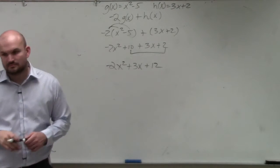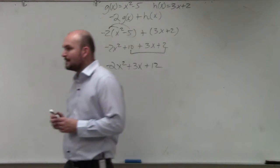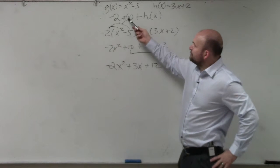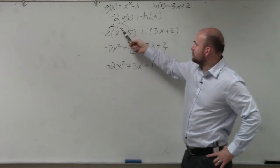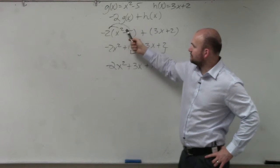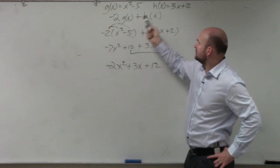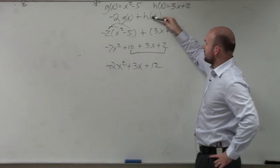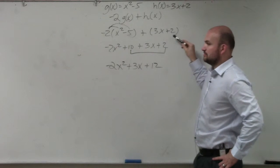How did you get that? How did you even get the first part? OK. Do you agree with me that g of x is the same thing as x squared minus 5? So all I did was I replaced g of x with x squared minus 5. h of x is the same thing as 3x plus 2. So I replaced h of x with 3x plus 2.